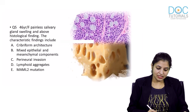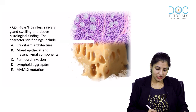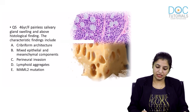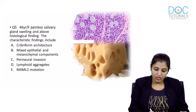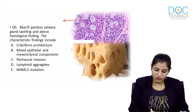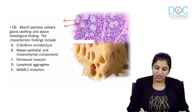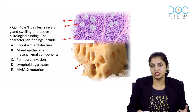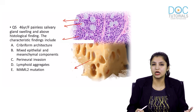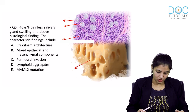Question number two: a 46-year-old female presents with a painless salivary gland lesion and this histological finding. What are its characteristics? This is a multiple true-false type question. You can see cookie-cutter appearances with dark, hyperchromatic cells — the Swiss cheese or cookie-cutter pattern typical of adenoid cystic carcinoma.